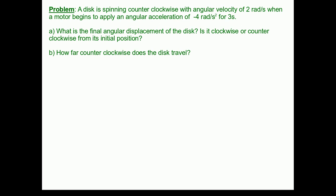Let's try using these equations in the context of a problem. A disk spins counterclockwise with an angular velocity of 2 radians per second, when a motor begins to apply an angular acceleration of negative 4 radians per second squared for 3 seconds. The question is, what is the final angular displacement of the disk? Is it clockwise or counterclockwise from the position at which the motor begins to apply the angular acceleration? Part B is, how far counterclockwise does the disk travel? What's the maximum counterclockwise angle that the disk travels through during this time that the motor is applying an angular acceleration?